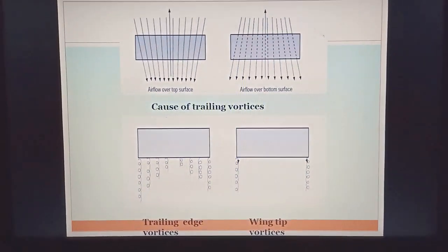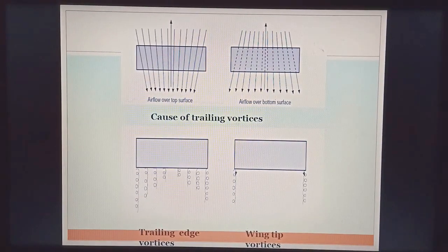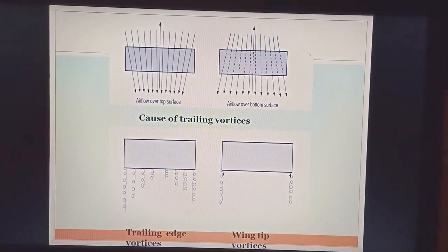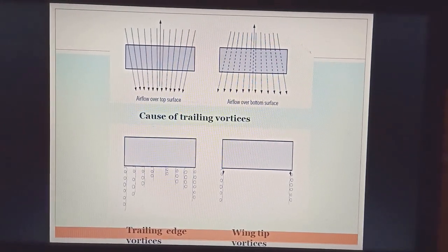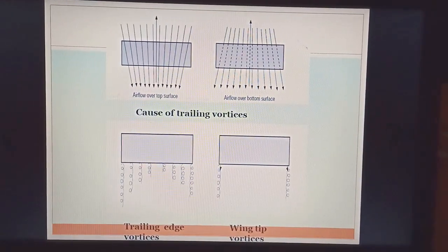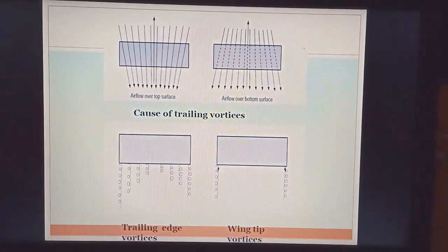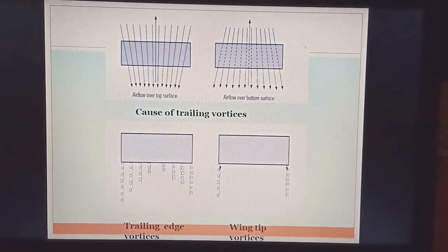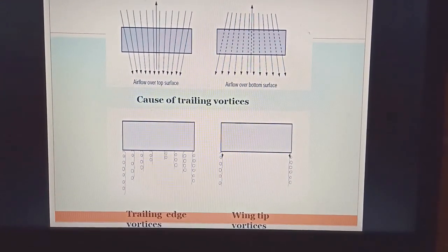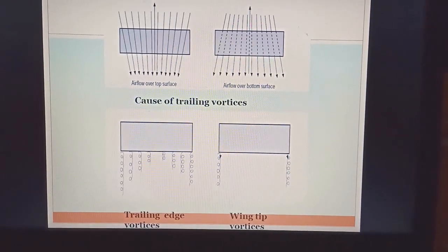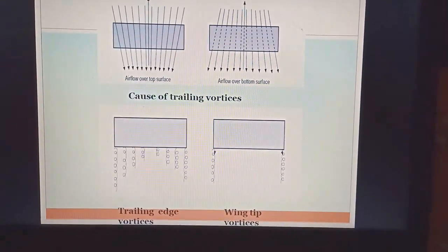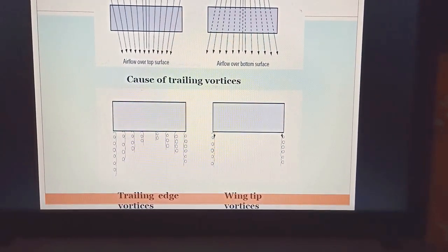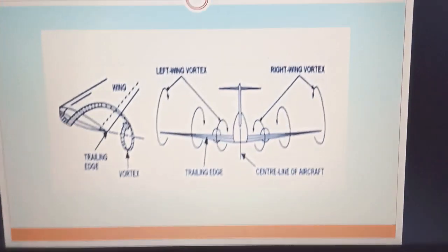To recall: the upper surface has a low pressure area and the lower surface has a high pressure area — this gives us lift. The flow tendency on the wing is to move from the lower surface to the upper surface, from high pressure to low pressure. On the upper surface, the velocity component tends inward, while on the lower surface it tends outward. These create trailing edge vortices, which collect toward the wing tip and form two strong wing tip vortices.